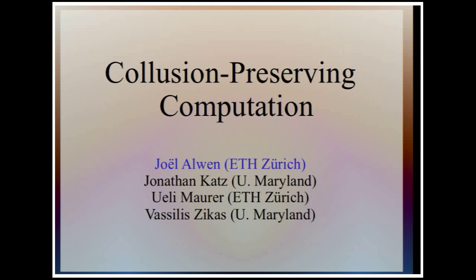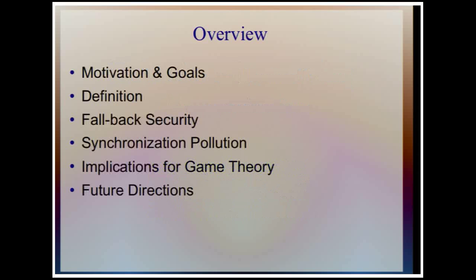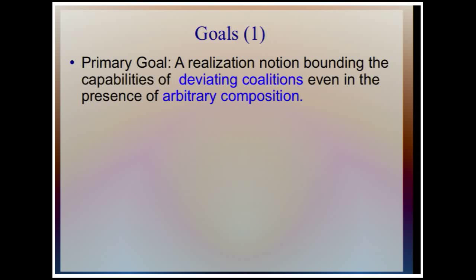I'm Joel Olwen, and this talk is on Collusion Preserving Computation. The primary goal in this work is we'd like to come up with a realization notion that bounds the capabilities of deviating coalitions, even in the presence of arbitrary composition.